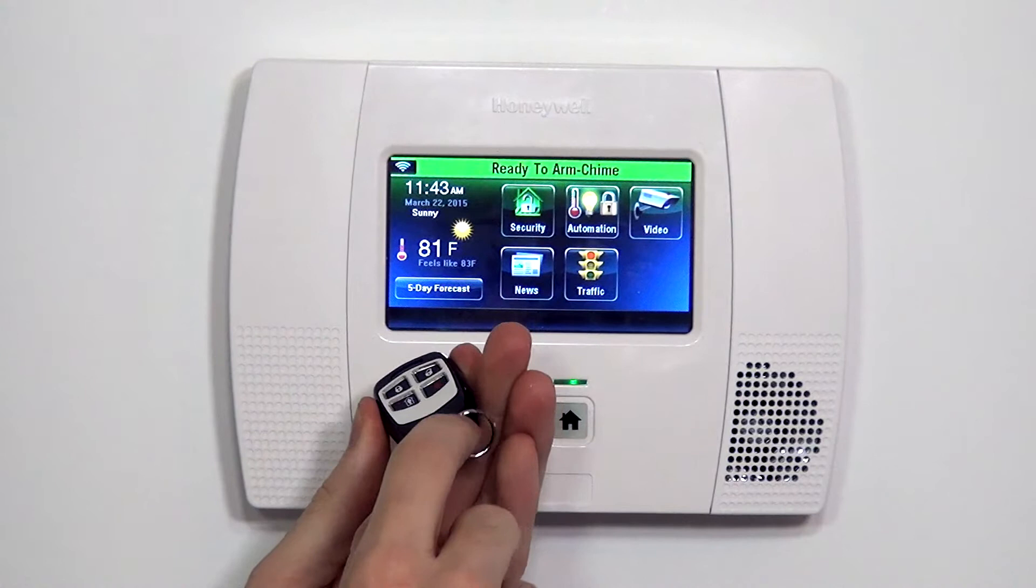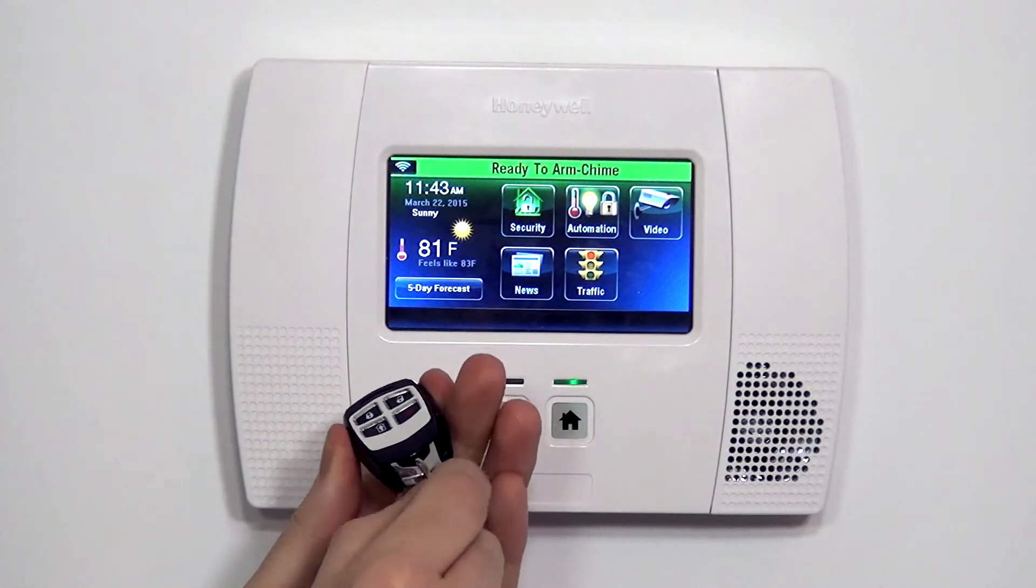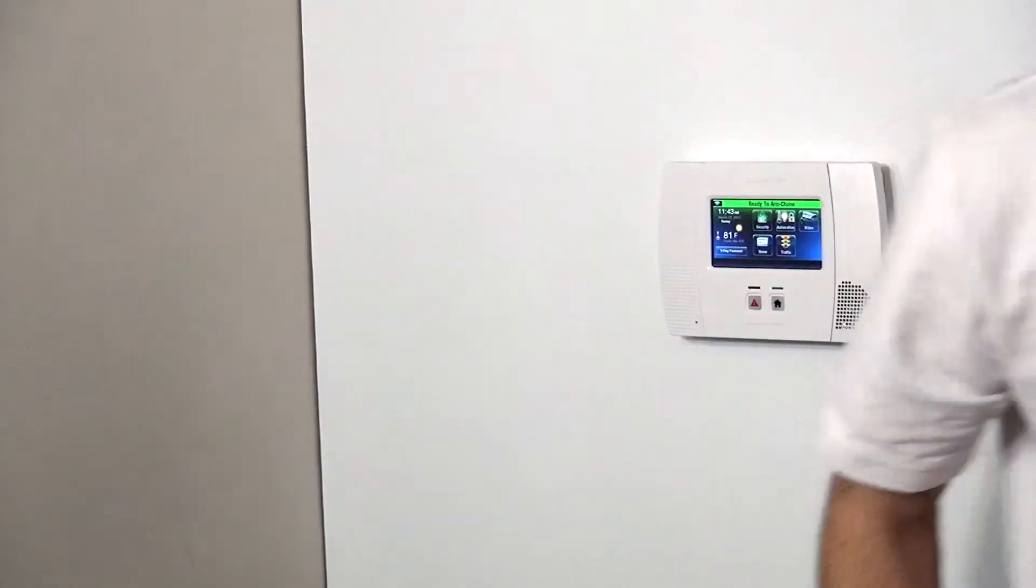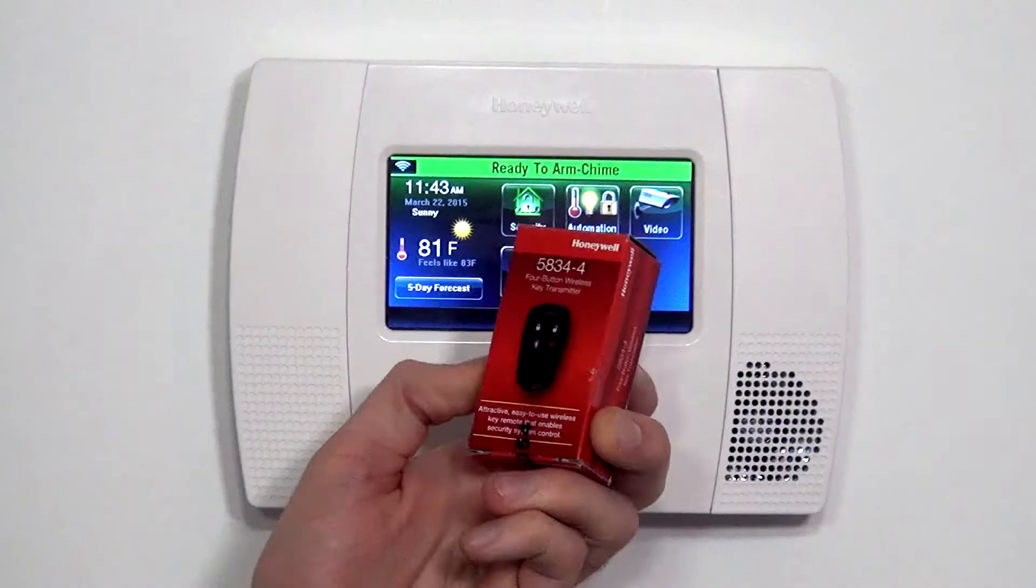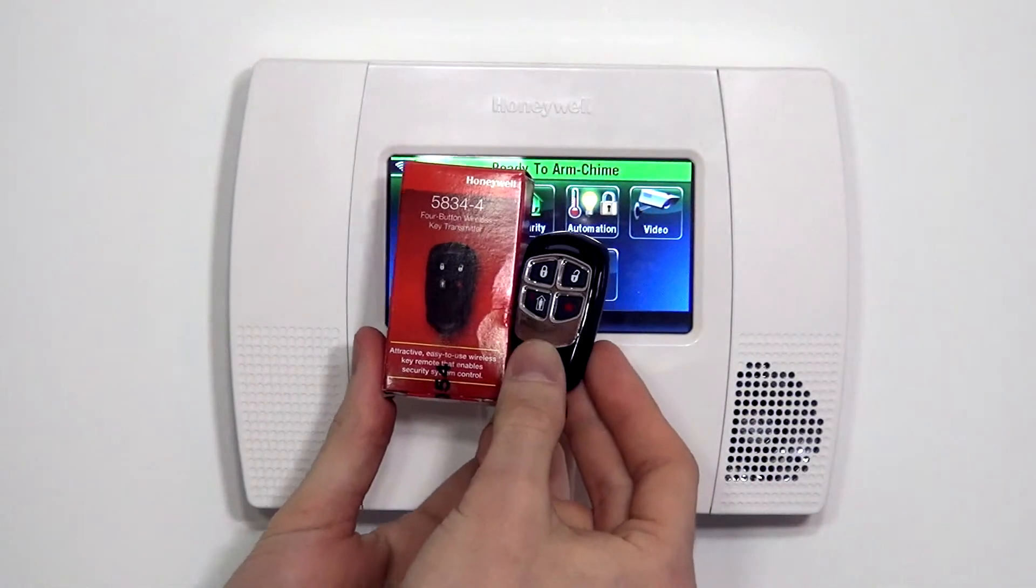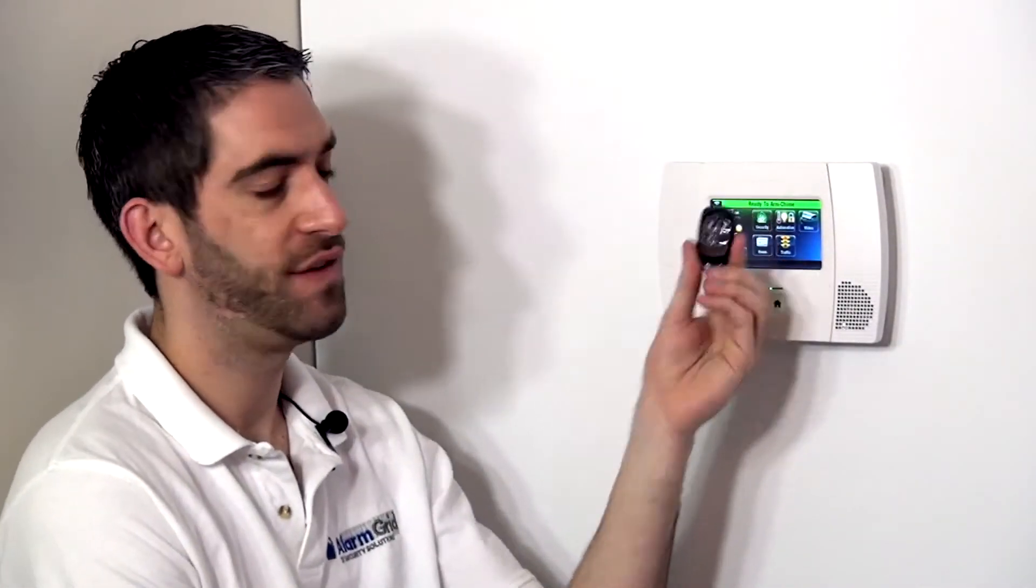We've got the silver on this beveled edge here where our keychain ring is. So mostly, it's a look and feel difference compared to the 5834, the standard one, which is just all black with the matte finish. So if you want a fancier looking key fob, this 5834-4EN is the one you want to get.